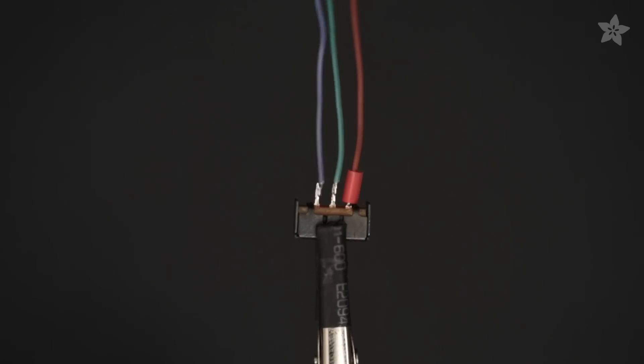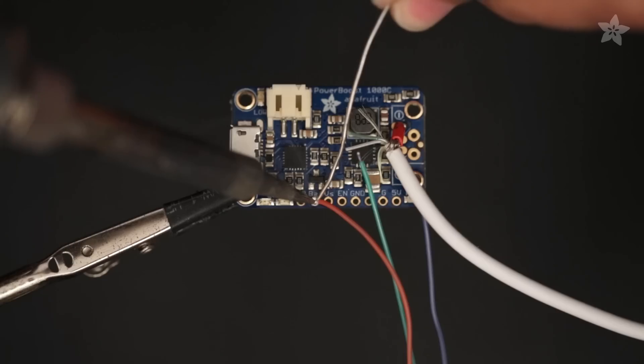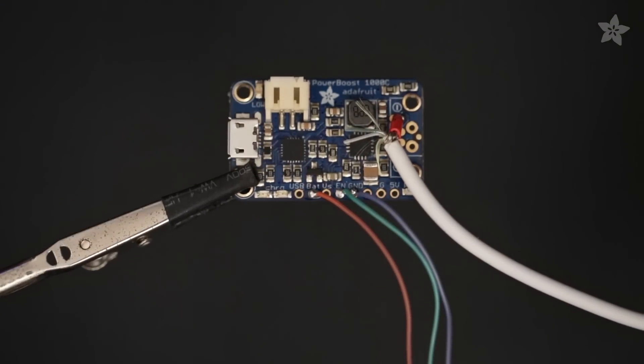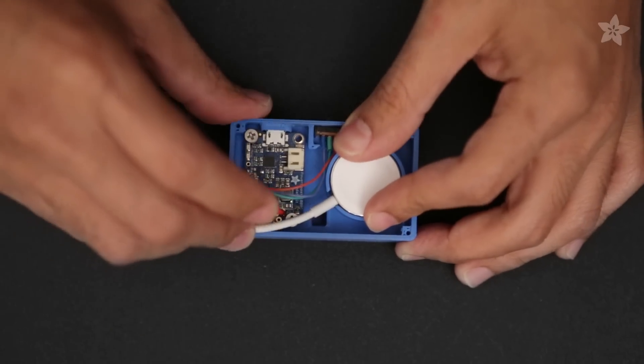Silicone coated stranded wires will make the slide switch connections more flexible. The slide switch is wired to the pinouts on the PowerBoost 1000C. The clips in the enclosure will hold the slide switch in place.